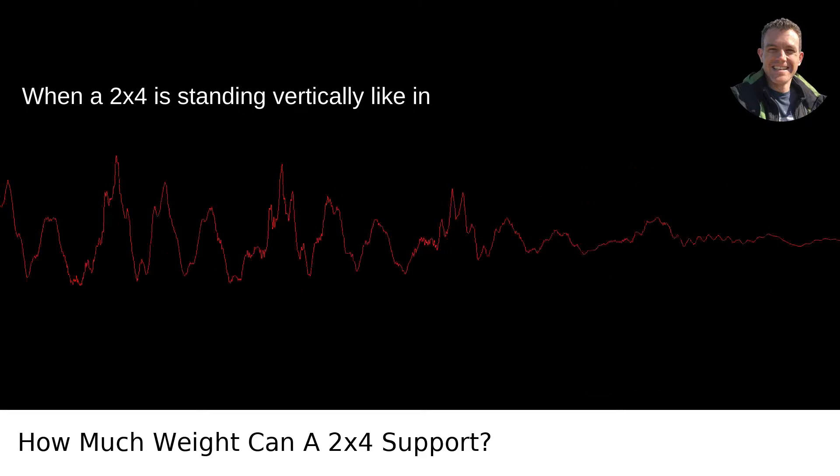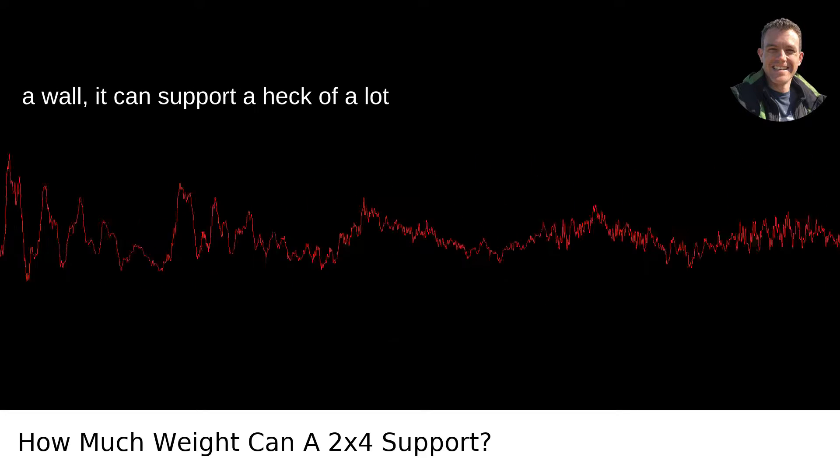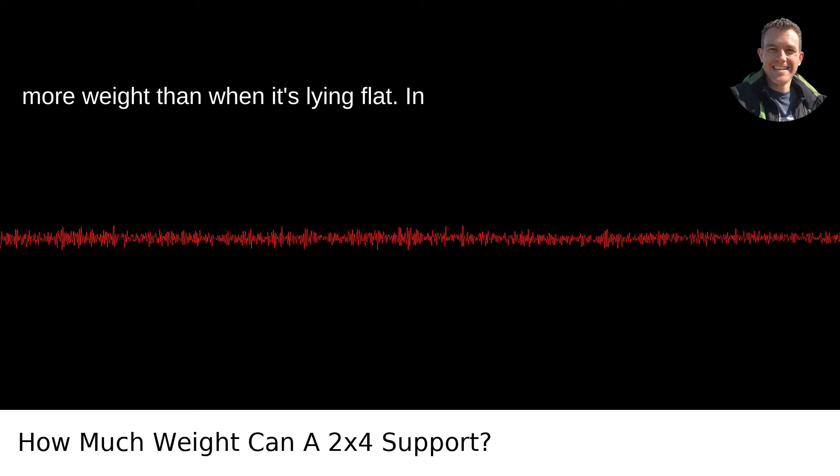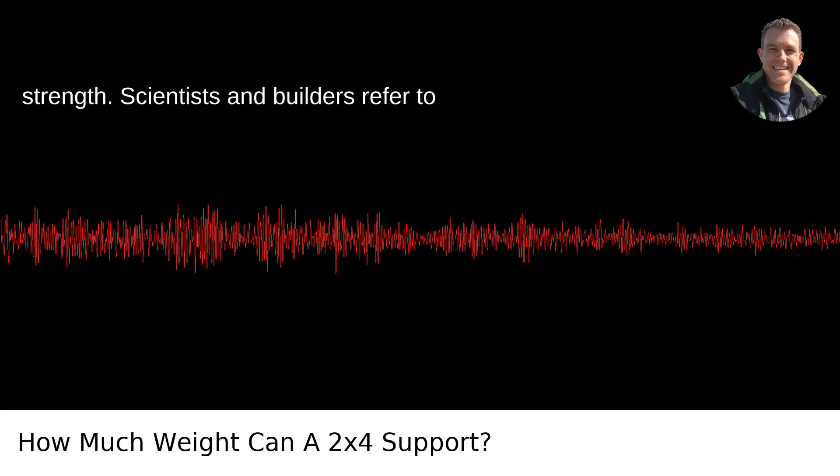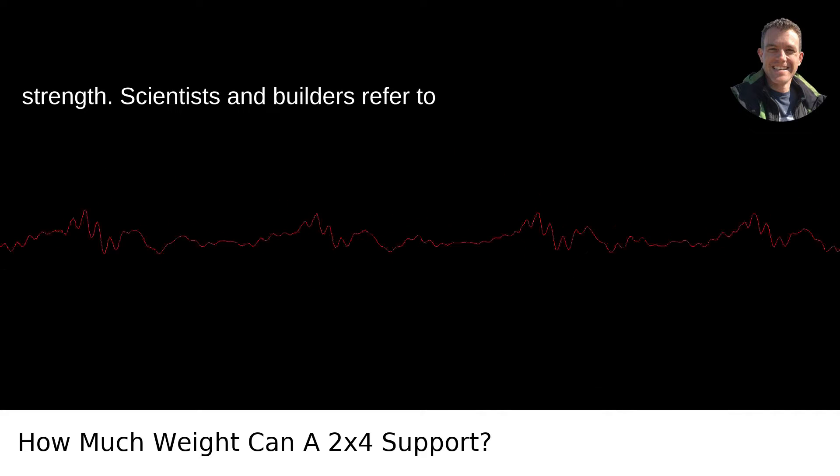When a 2x4 is standing vertically like in a wall, it can support a heck of a lot more weight than when it's lying flat. In technical terms, vertical orientation allows it to have a greater compressive strength. Scientists and builders refer to it with this cool term, axial load.